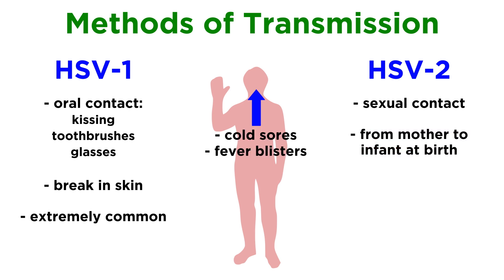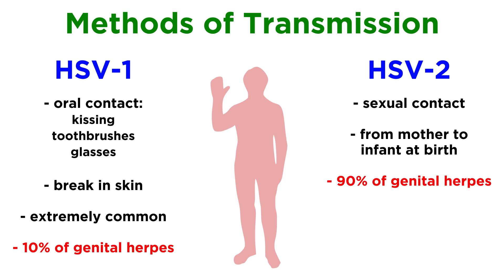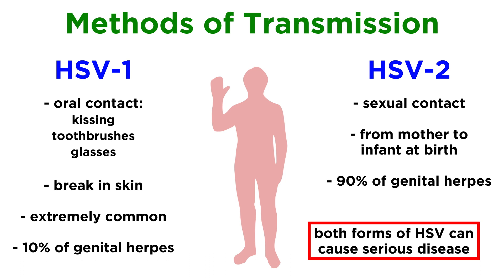Some common symptoms of HSV infection are cold sores and fever blisters, often at the corners of the mouth or next to the lips. When it comes to genital herpes, about 90% of cases are caused by HSV2, while the other 10% are caused by HSV1. It's worth noting that HSV1 or HSV2 can cause serious disease in immunocompromised people, or by infecting tissues like the eyes or brain.